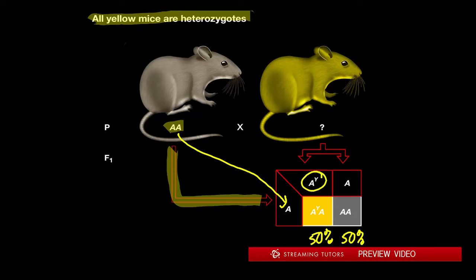the big AY half of the time and big A the other half of the time. So every yellow mouse that was in existence, when they crossed it like this, they always got the 50-50 ratio, which implies strongly that the yellow mouse is in fact heterozygous for this AY mutation and the regular agouti allele.